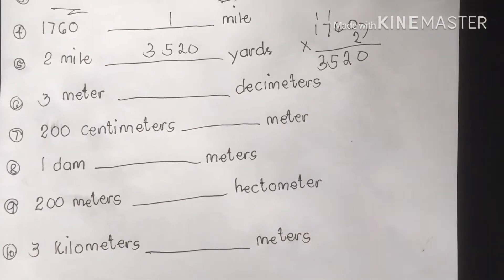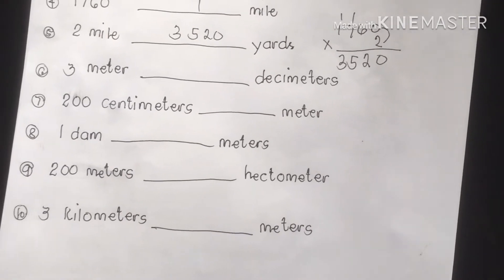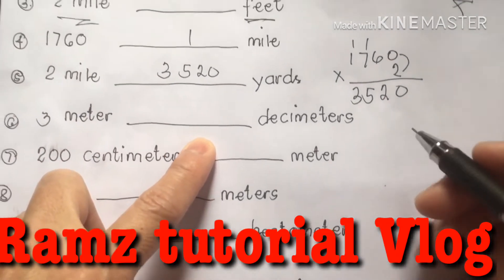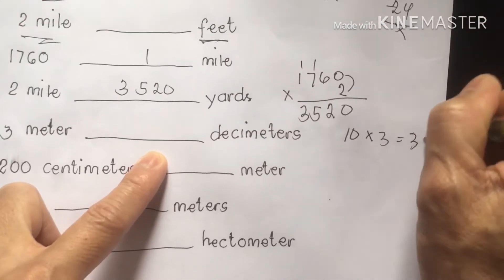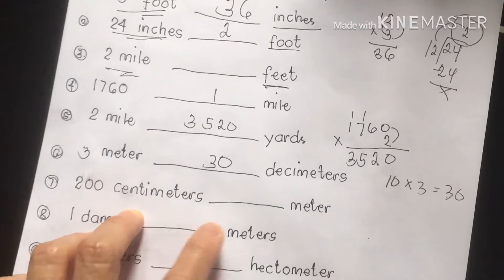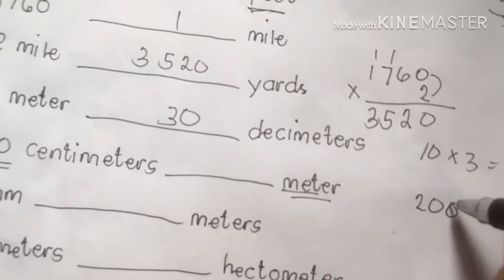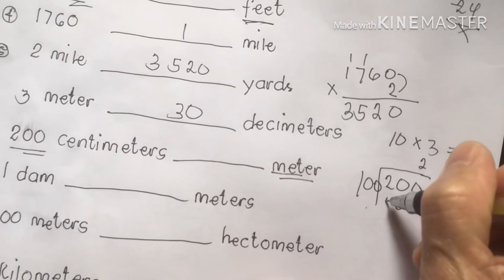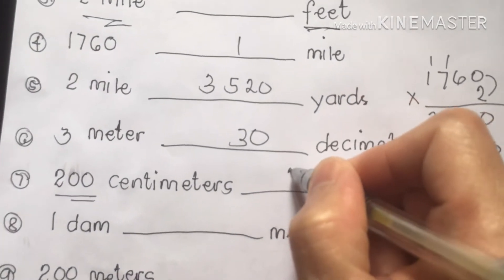Next, number 6: 3 meters equivalent to how many decimeters? We are going to multiply it because in 1 meter we have 10 decimeters. So 10 times 3, the answer is 30 decimeters. Next: 200 centimeters, how many meters? We are going to divide it by 100. 200 divided by 100 equals 2. Our answer: 200 centimeters is equivalent to 2 meters.